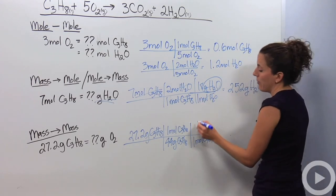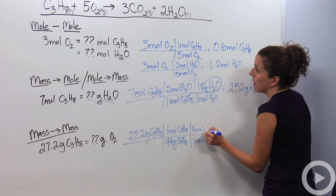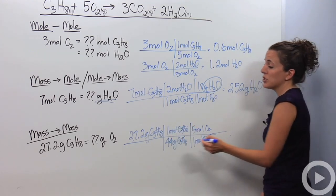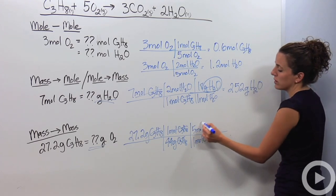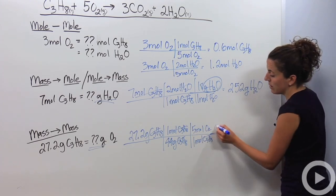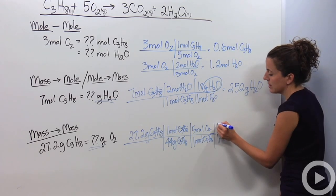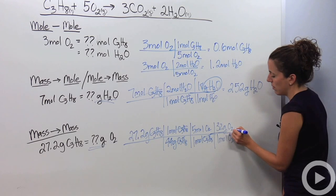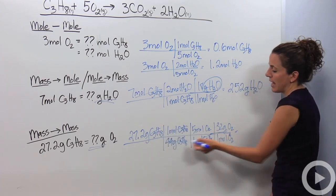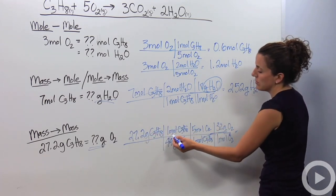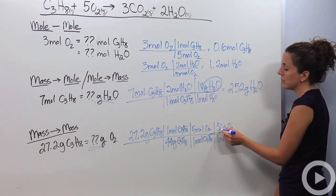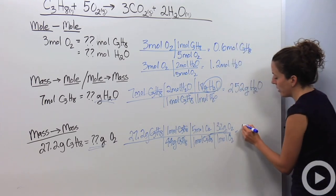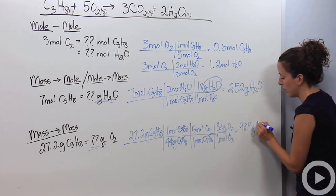These guys can cross out because they're on top and bottom. But my question asks for grams of oxygen gas. Right now I'm in moles of oxygen gas. So I'm going to continue and say I know that one mole of oxygen gas is 32 grams, looking at my periodic table. If I were to multiply whatever's on top and divide whatever's on the bottom, I get 27.2 times 1 times 5 times 32 divided by 44 divided by 1 divided by 1, which ends up giving me 98.9 grams of O2.